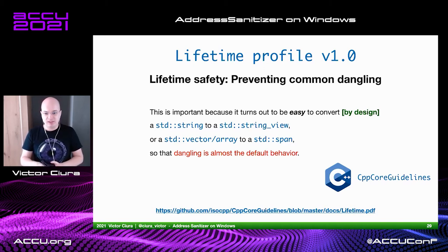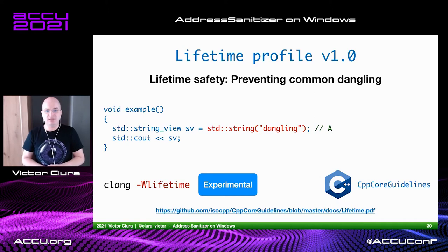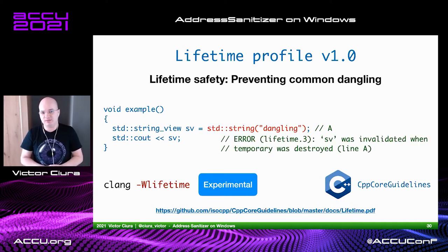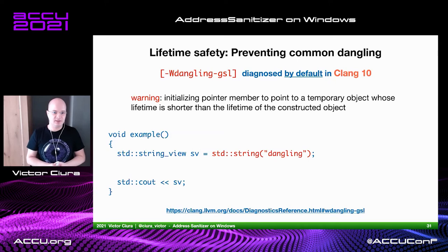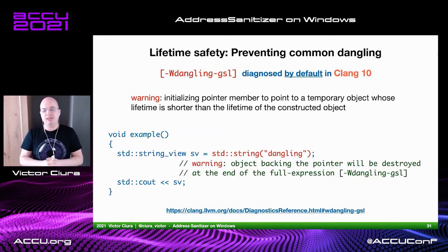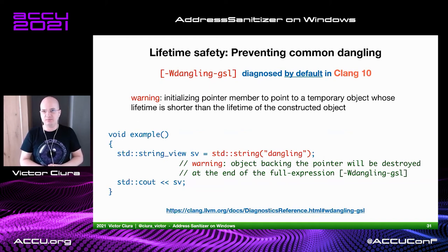Until people gain good practice in how to use `string_view` and `span` — because of their nature of being not quite value types and not quite reference-semantic types, a strange new kind of beast — they will lead to dangerous combinations. It's good that we have some tooling to help us there. The `-Wlifetime` experimental flag in clang helps pinpoint stuff like this. The example shown is very contrived and trivial, but you'll see much more complicated cases pop up in real-world use. Fortunately, `-Wdangling-gsl` is diagnosed by default starting with Clang 10.